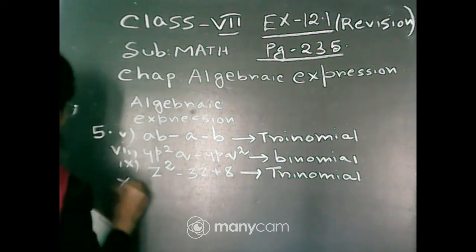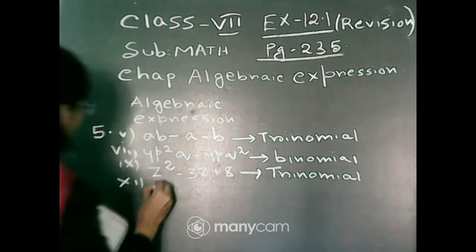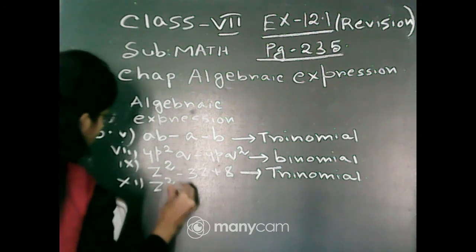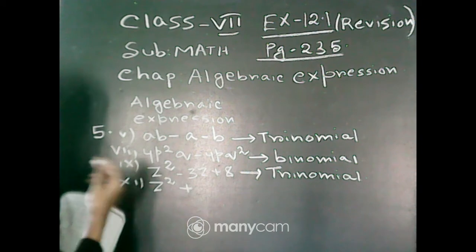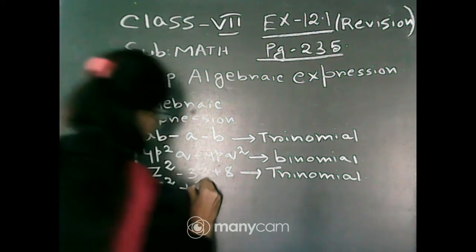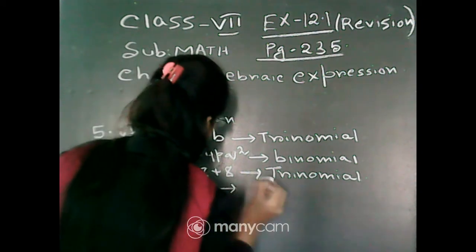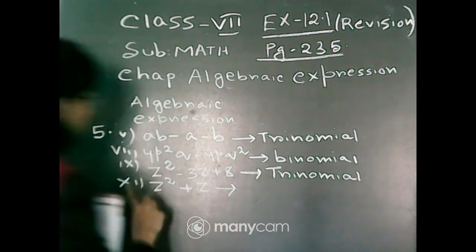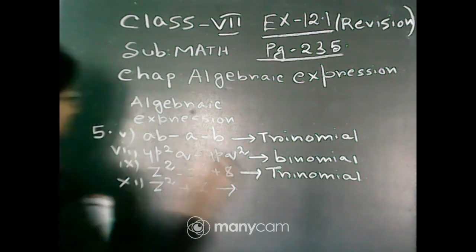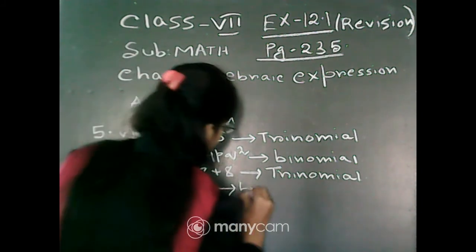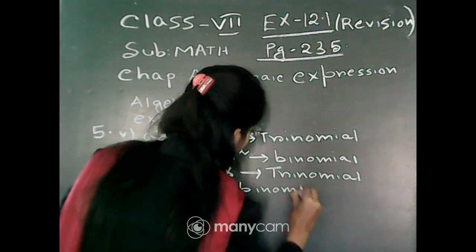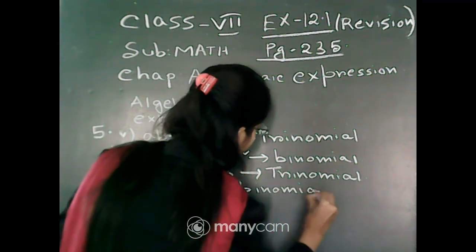Next, question number 11. Here the given algebraic expression is z square plus z. It contains 2 terms: z square and z. Therefore, it is a binomial.